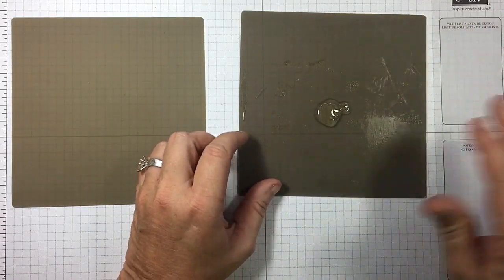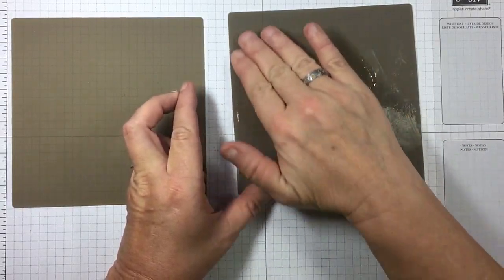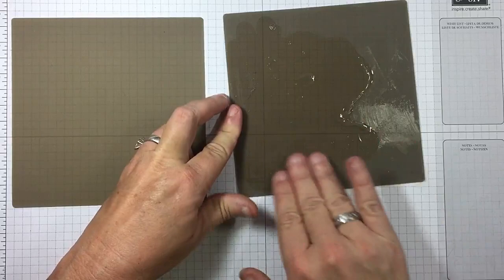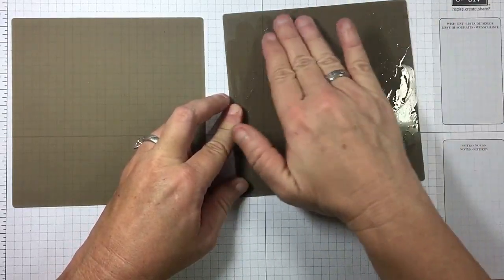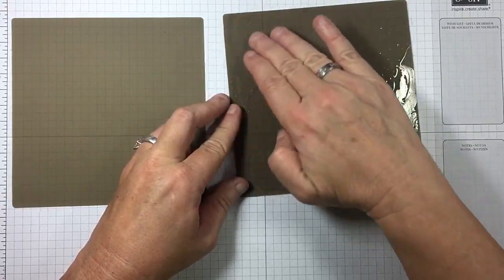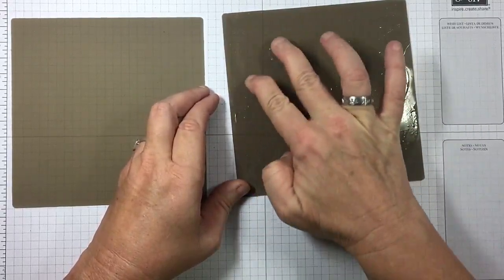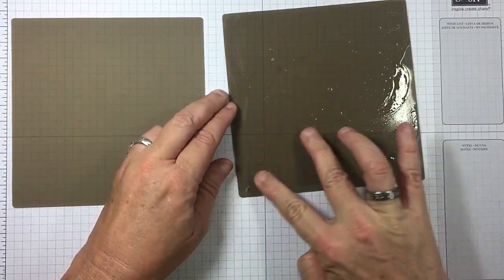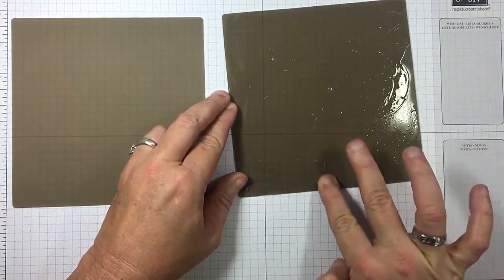And literally, you can feel it breaking down all of that adhesive on there, whether it's from a tape runner or from your glue. You may have to get a little more aggressive if it's from tape runner, but believe me, it's just that simple. I'm massaging my fingers around just like this.